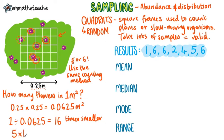Let's say we took our count to be 5. We would now just do 5 times 16 to see how many you get in one meter squared, and it comes out at 80 flowers per meter squared.